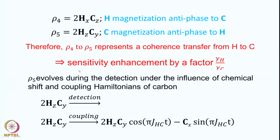This means there is a significant sensitivity enhancement of the carbon magnetization by a factor of γH/γC, because the proton magnetization is determined by the gyromagnetic ratio of proton, and the carbon magnetization is normally determined by the gyromagnetic ratio of carbon. Here the proton magnetization appears as carbon magnetization, giving a sensitivity enhancement factor of 4 for carbon-13. For nitrogen-15, this factor would be 10, implying substantial saving in experimental time since experimental time goes as the square of this factor.